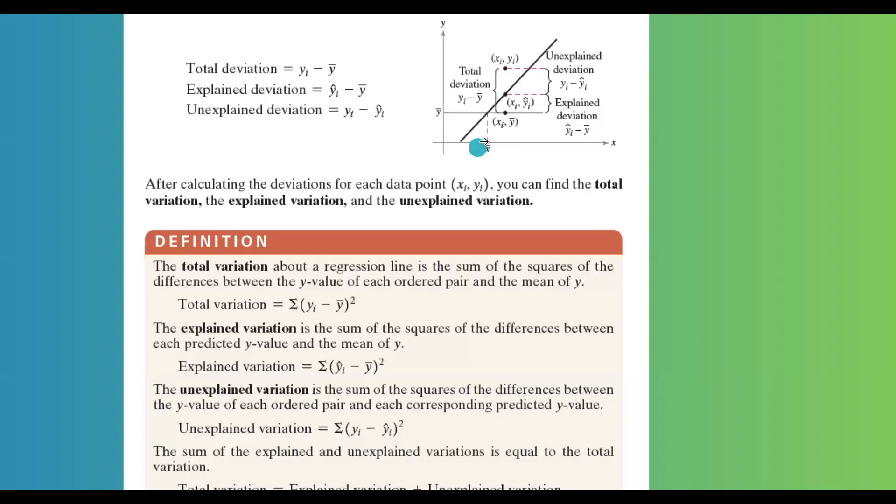Now that we introduced the regression line, we're going to introduce some new terminologies. The total variation about the regression line is the sum of the square of the differences between the y value of each ordered pair and the mean of y.